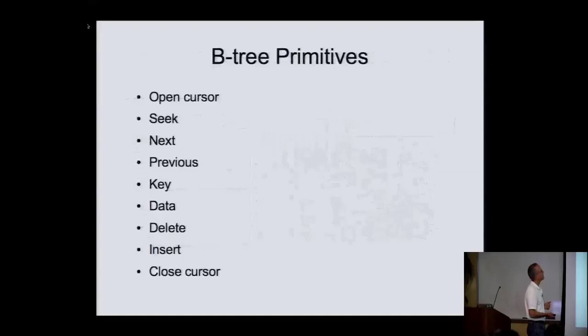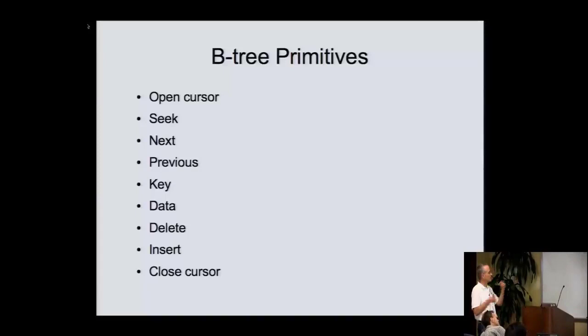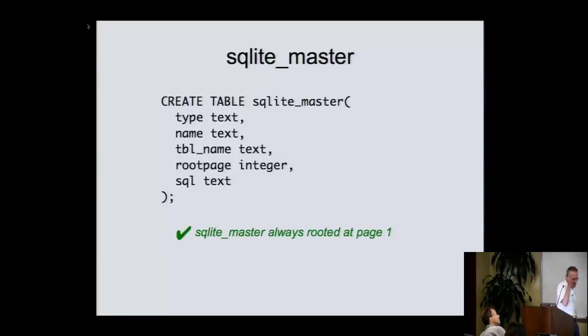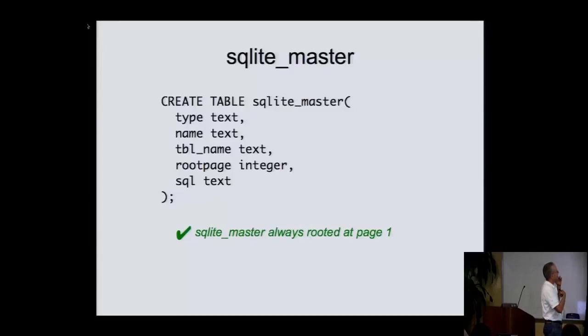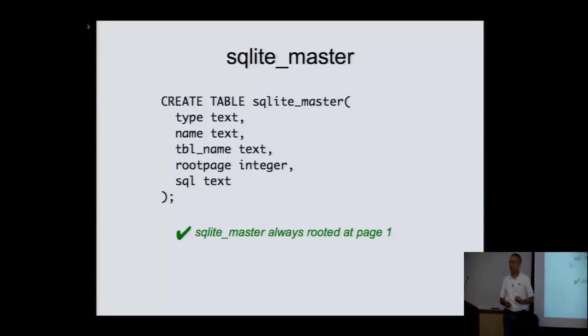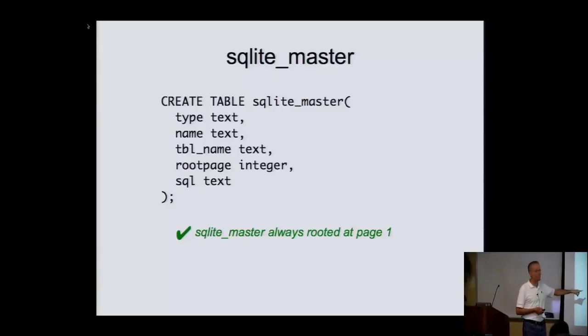The B-tree primitives: you access B-trees by cursor. You open a cursor, seek on the cursor forward and back, ask for the data or the key, and close the cursor. How do we find the root pages for each B-tree in the file? There's a special table in every SQLite database called the SQLite master table. It's there by default, you can't change it. It has the type (table, index, view, or trigger), the name, the original SQL text that created it, and also the root page number. This particular table always has its root at page one — so we go to page one, there's a B-tree there, we read it and find the root page of every other table in the file.